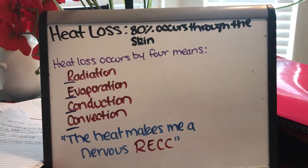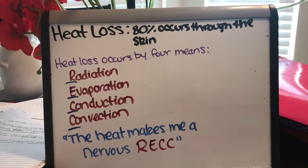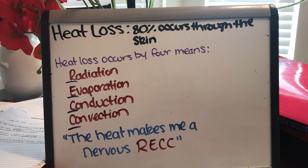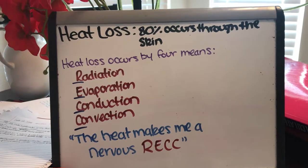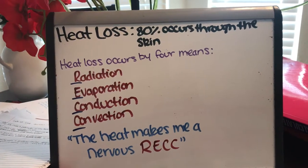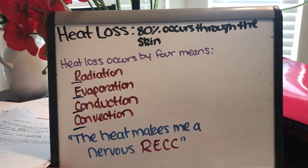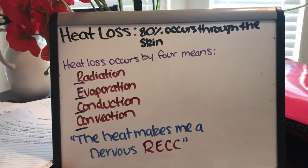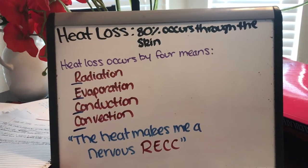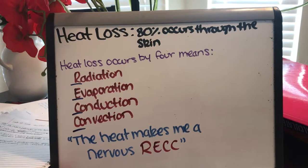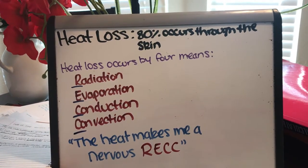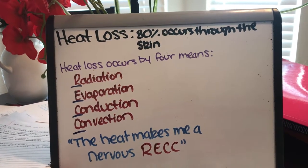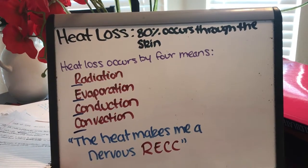Conduction is the loss of heat from a warm body to a cooler object in contact with the warm body. For example, a warm person becomes cold when sitting on a block of ice, which is the cooler object.